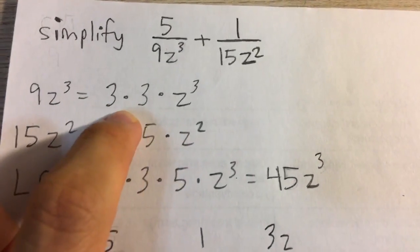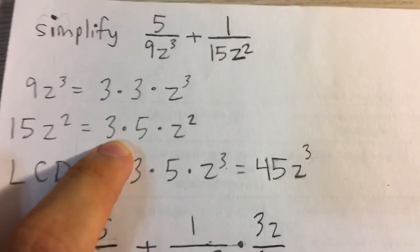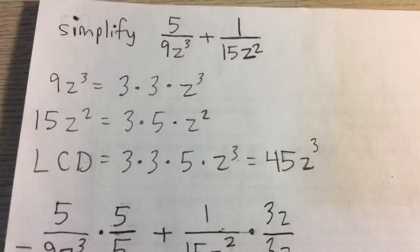9z cubed can be broken up to 3 times 3 times z cubed. 15z squared can be broken up into 3 times 5 times z squared.